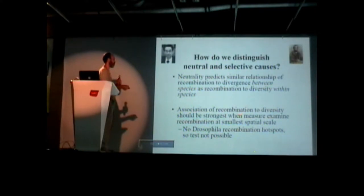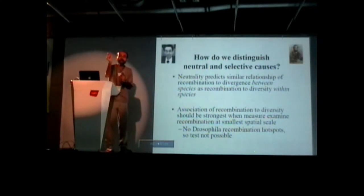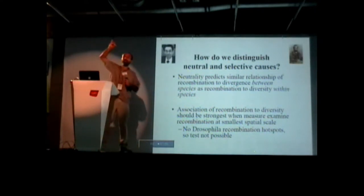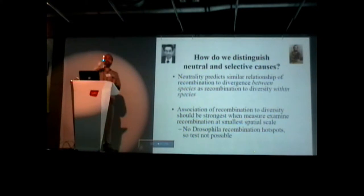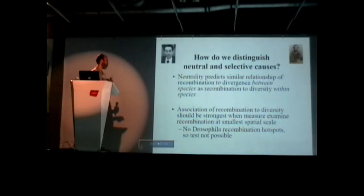The other test for the association of recombination with diversity: it should be strongest when you measure recombination at the smallest scale. If you look right at a recombination hotspot, you should see a big difference in sequence, whereas if you go further and further away, you should see less. The problem is that in Drosophila, it has been said for many years that there are no recombination hotspots, so this test is not possible.